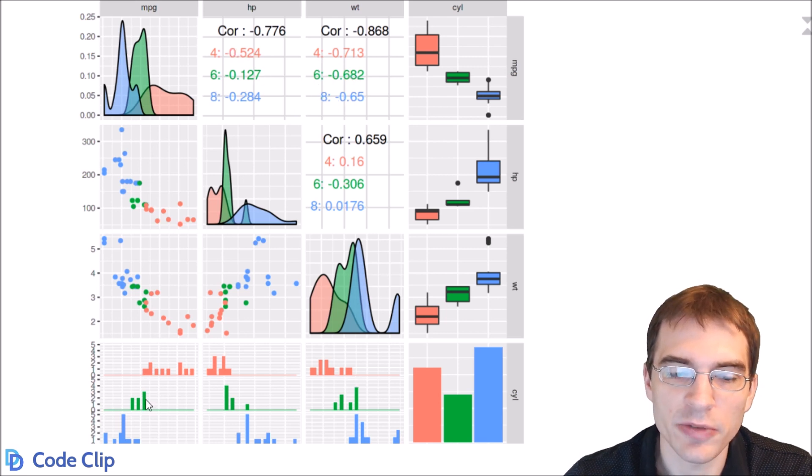And you also notice that the cylinder variable, since it's been encoded as a factor now instead of numeric, has different plots in all of the cells. So normally in a scatterplot matrix, you're only passing in numerics, but this ggpairs function can actually handle other variables and do other useful things with them.